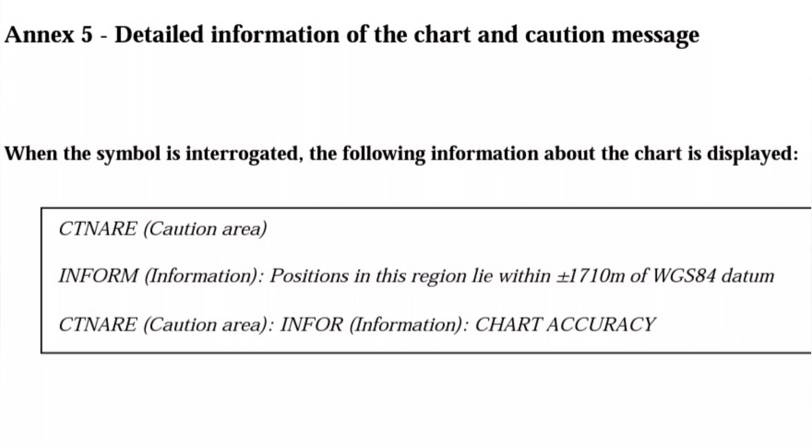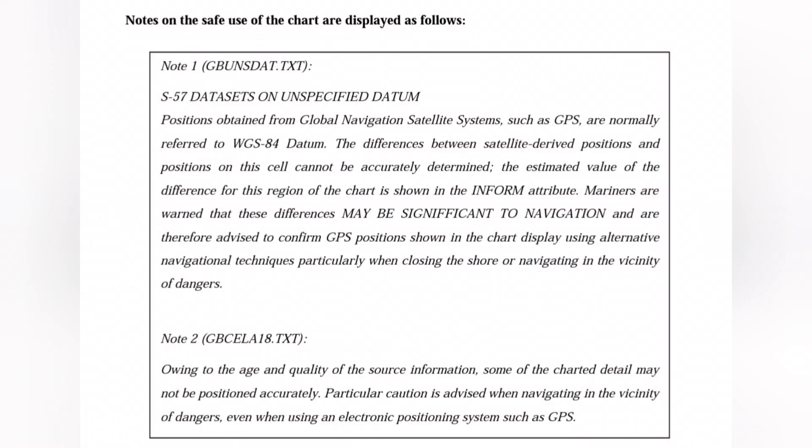Here you can see the notes on the safe use of charts displayed as follows. You can see the text files mentioning S-57 data sets on unspecified datum. It states: 'Positions obtained from global navigational satellite systems such as GPS are normally referred to WGS-84 datum. The difference between the satellite-derived positions and positions on the cell cannot be accurately determined. The estimated value of the difference for this region of the chart is shown in the information attribute. Mariners are warned that these differences may be significant to navigation and are therefore advised to confirm GPS positions shown on the chart using alternative navigational techniques, particularly when closing the shore or navigating in the vicinity of dangers.'